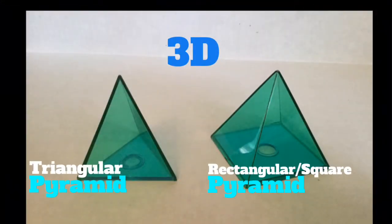Here are two pyramids named because of their base, the rectangular square pyramid and the triangular pyramid.